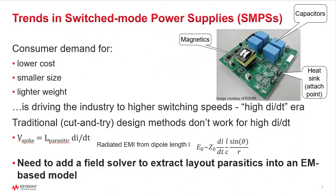Let's first set the scene by looking at some trends in switch mode power supplies. Consumers are demanding lower cost, smaller size, and lighter weight. That means we have to work on the heaviest, largest, and most expensive components: the magnetics, the capacitors, and the heat sinks which attach to these transistors. You can achieve this by going to wideband gap semiconductors — silicon carbide — and achieve a higher DI/DT, which gives you lower cost, smaller size, and lighter weight.